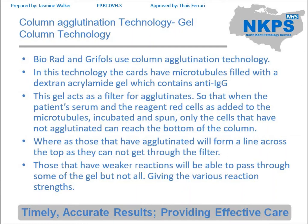If there has been a reaction and there is agglutination, it won't be able to pass through the gel, so you will end up with a line at the top of the microtubule. If there is some agglutination but it's not really strong, then some of that will be able to break away and pass partially through the gel. If there's no agglutination then it will be small enough to go to the bottom of that column. That's how we can tell if it's a positive or negative reaction.